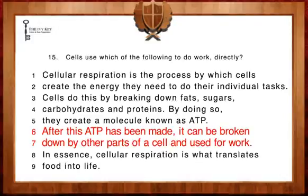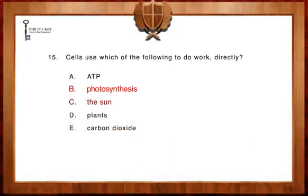In terms of answers B, C, and D—photosynthesis, the sun, and plants—these entities are used earlier in the process of cellular respiration, but can't be used by human cells directly to do work.